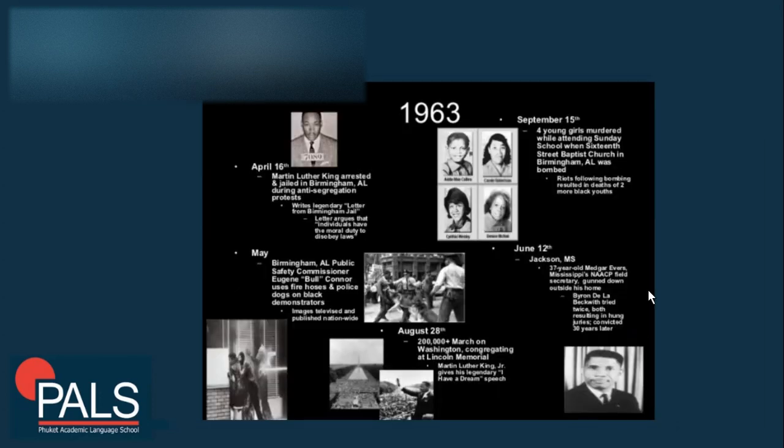In 1963, on April 16th, Martin Luther King was arrested and jailed in Birmingham, Alabama during anti-segregation protests. He wrote the legendary Letter from Birmingham Jail, which argues that individuals have a moral duty to disobey unjust laws. In May, Birmingham's public safety commissioner Bull Connor used fire hoses and police dogs on black demonstrators. The images were published nationwide and televised.